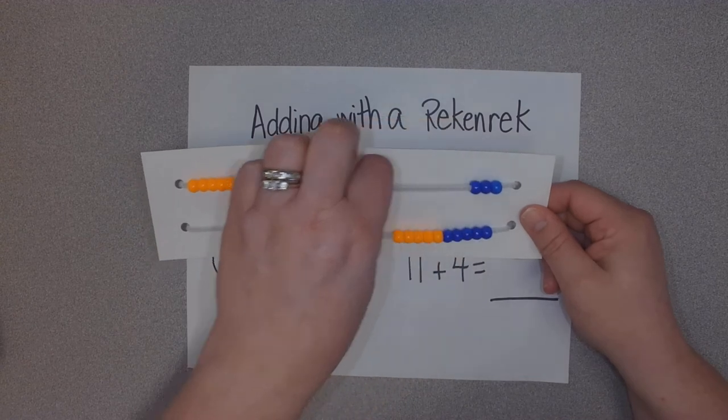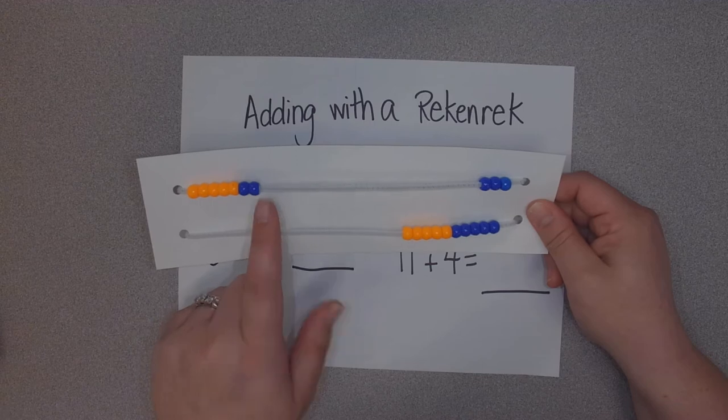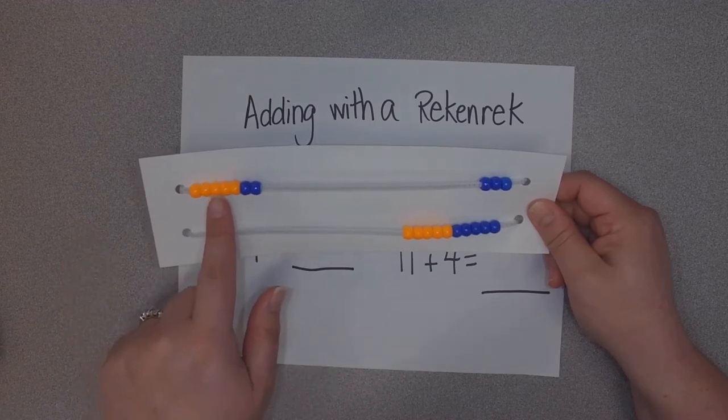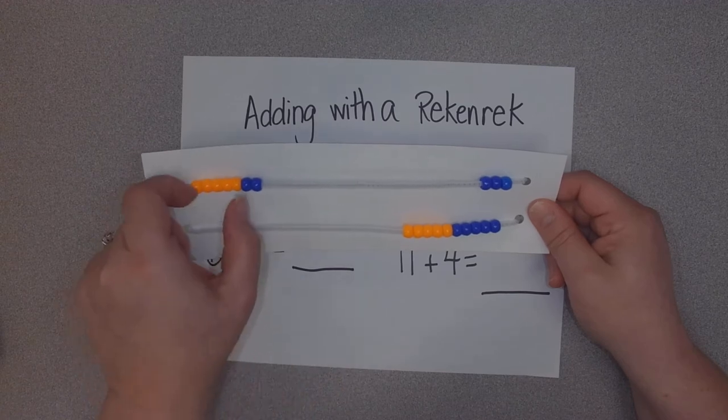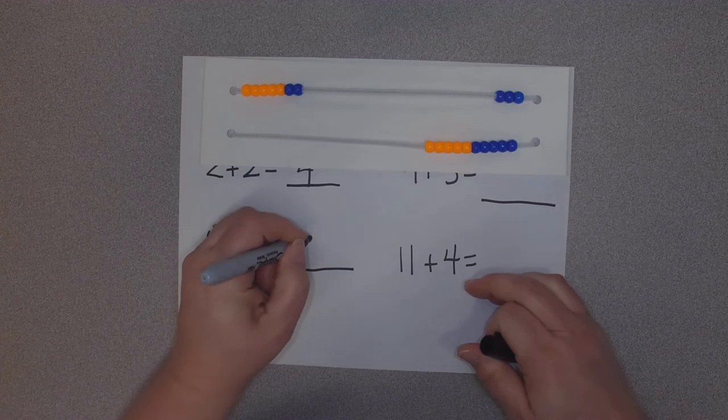Now I need to add one more, this time I'm going to just add it right on the top here. So I have five, six, seven, or if you have to count them out, it's one, two, three, four, five, six, seven. It's a little more efficient to just go five, six, seven, but do what you need to do. My answer there is seven.